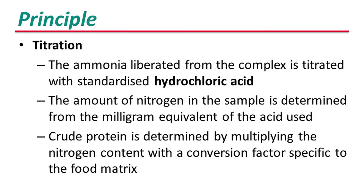Finally, the ammonia liberated from the complex is titrated with standardized hydrochloric acid. The amount of nitrogen in the sample is determined from the milligram equivalent of the acid used. Crude protein is determined by multiplying the nitrogen content with a conversion factor specific to the food matrix.